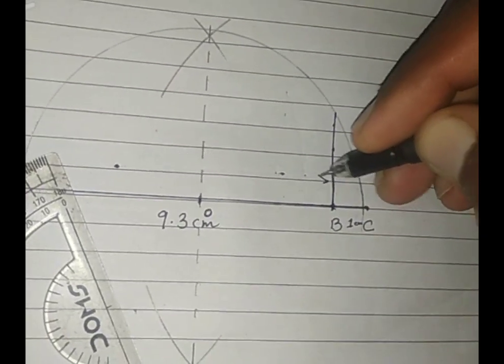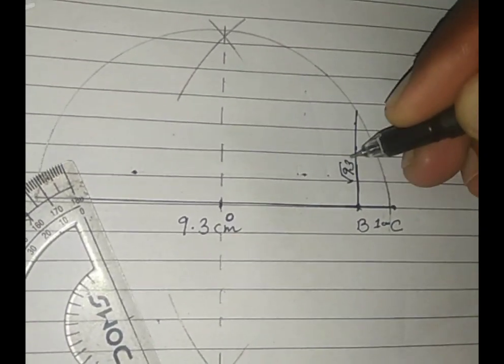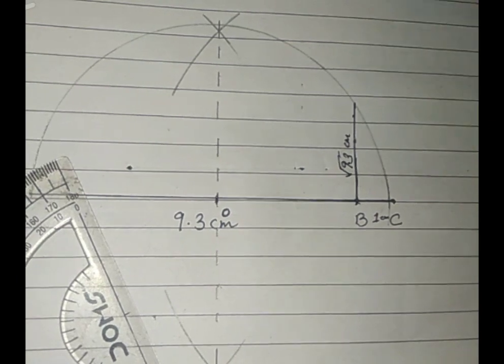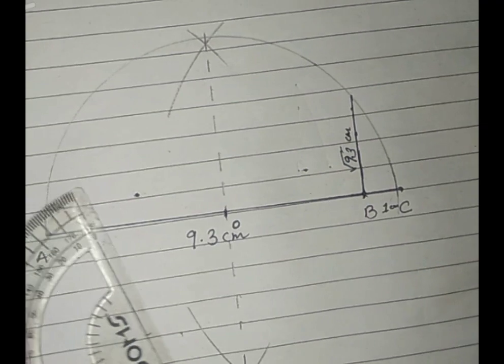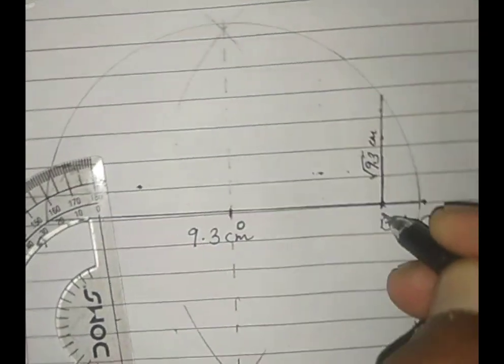Now we have to represent √9.3 on the number line, so I am taking B as 0.